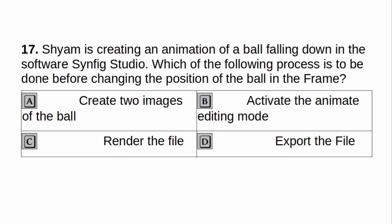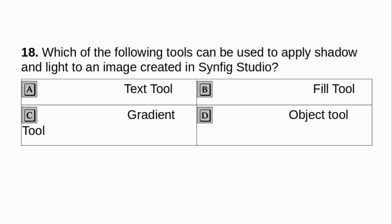Siam is creating an animation of a ball falling down in the software Synfig Studio. Which of the following process is to be done before changing the position of the ball in the frame? A. Create two images of the ball. B. Activate the animated editing mode. C. Render the file. D. Export the file. Answer: B. Activate the animated editing mode. Which of the following tools can be used to apply shadow and light to an image created in Synfig Studio? A. Text tool. B. Fill tool. C. Gradient tool. D. Object tool. Answer: C. Gradient tool.